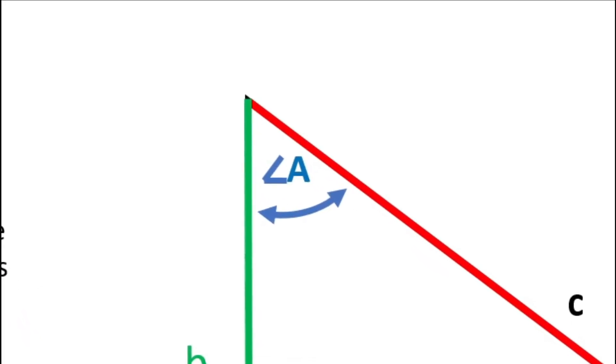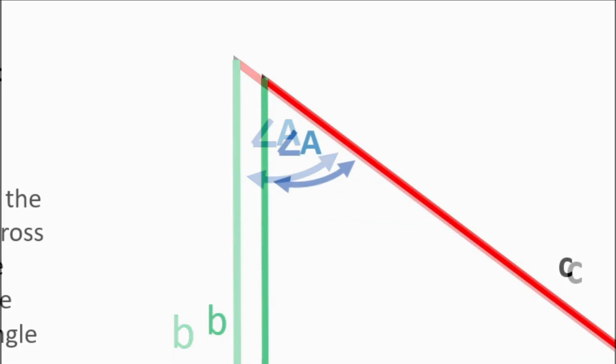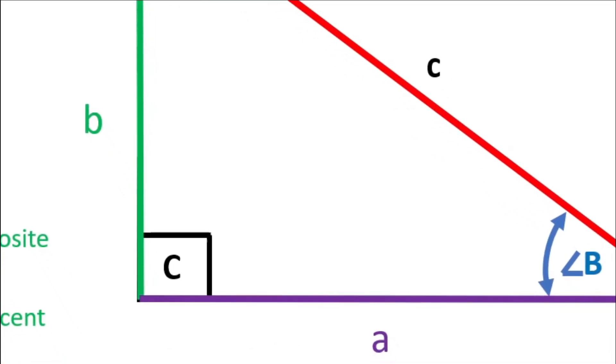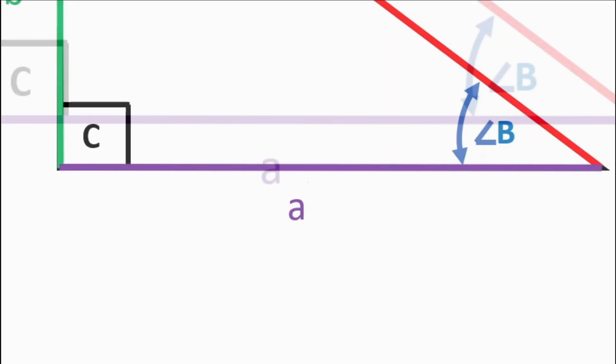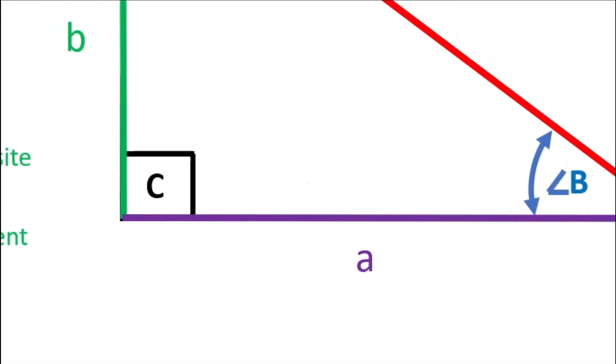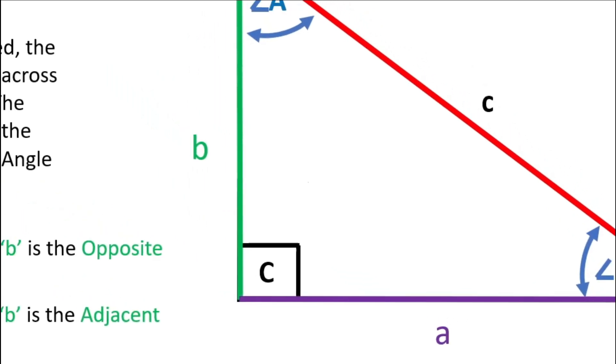If angle A is our reference angle, then side A is now our opposite side, and side B is now our adjacent side.